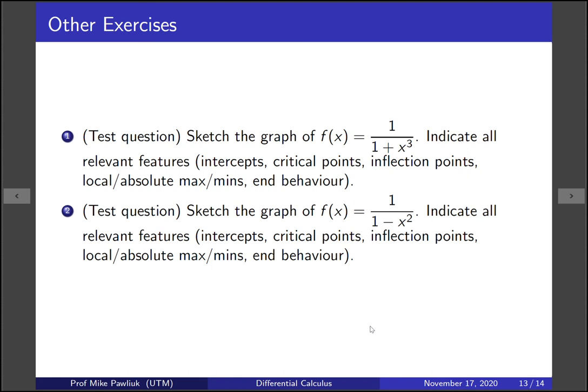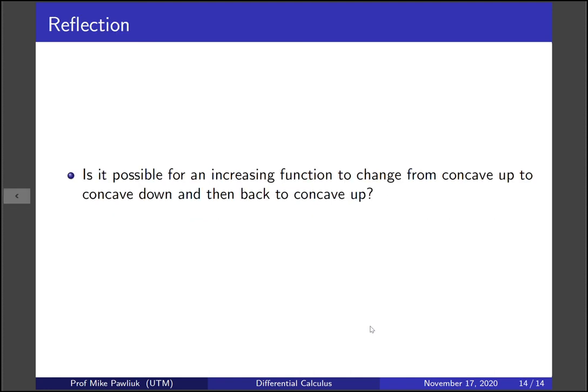Here are some additional exercises. Sketch the graph of f(x) equals 1 over 1 plus x cubed, indicating all relevant features: intercepts, critical points, inflection points, local and absolute maxes and mins, and end behavior. Also sketch the graph of 1 over 1 minus x squared. Take a moment to reflect: is it possible for an increasing function to change from concave up to concave down and then back to concave up, one after another?